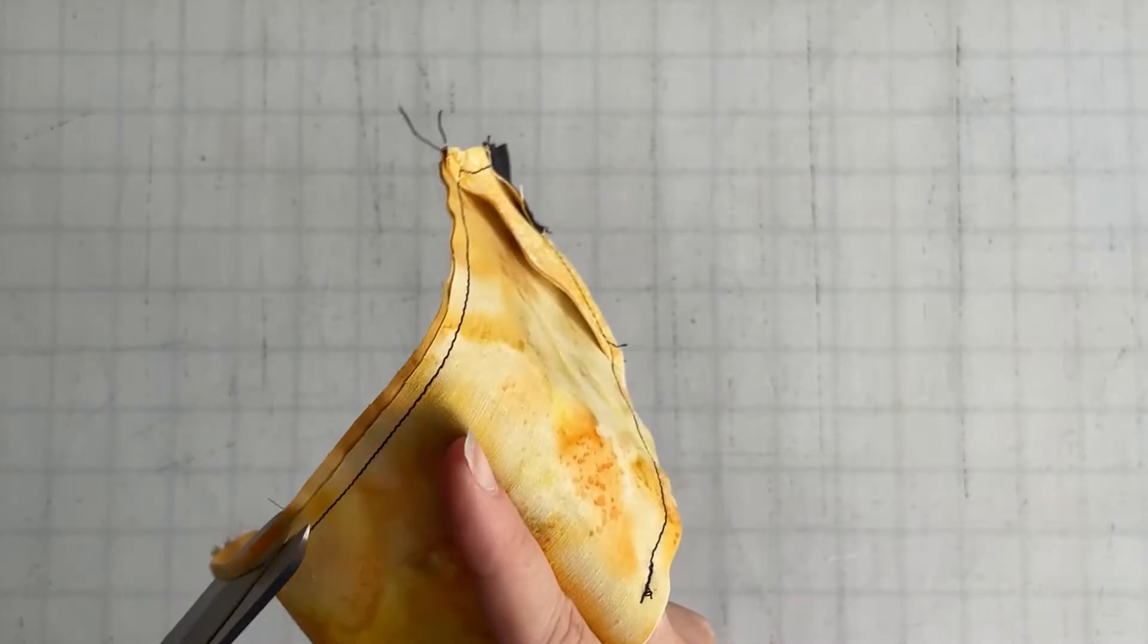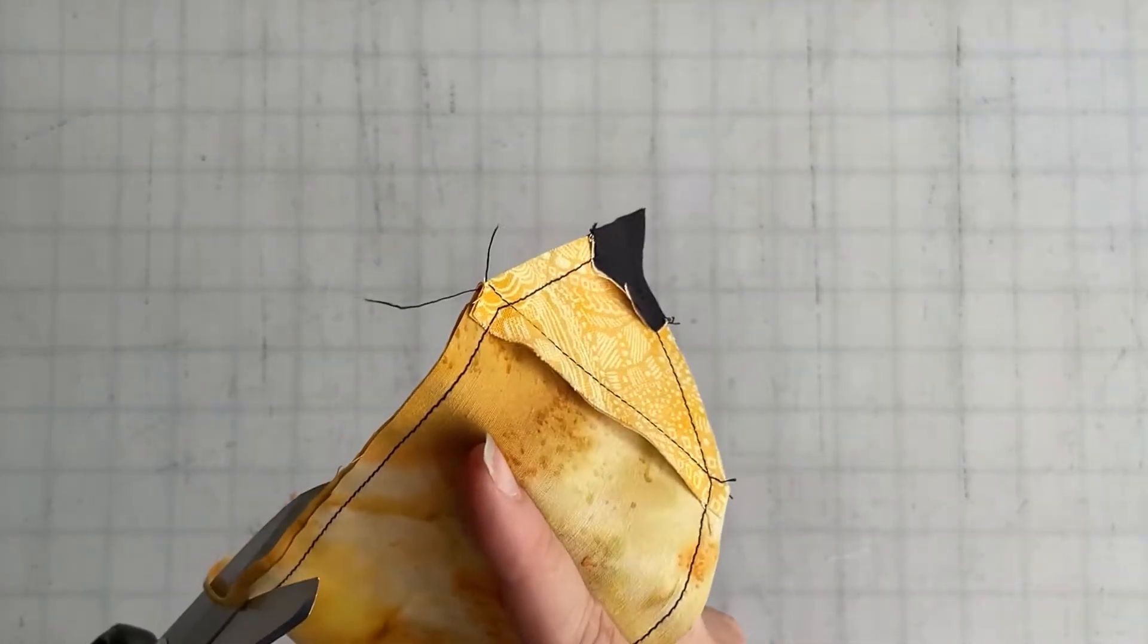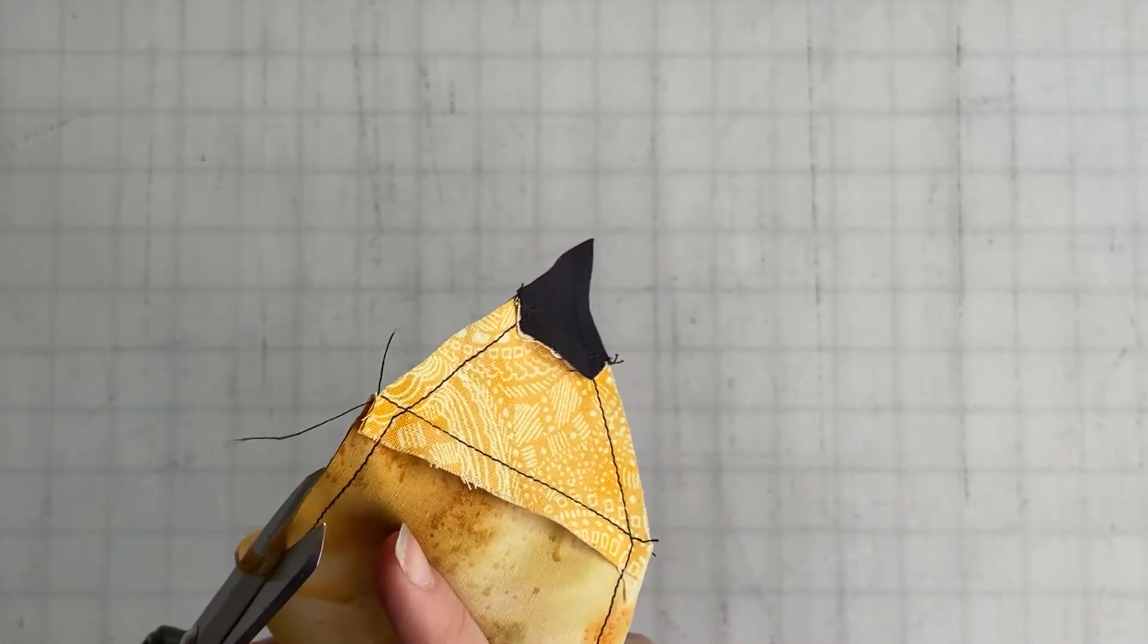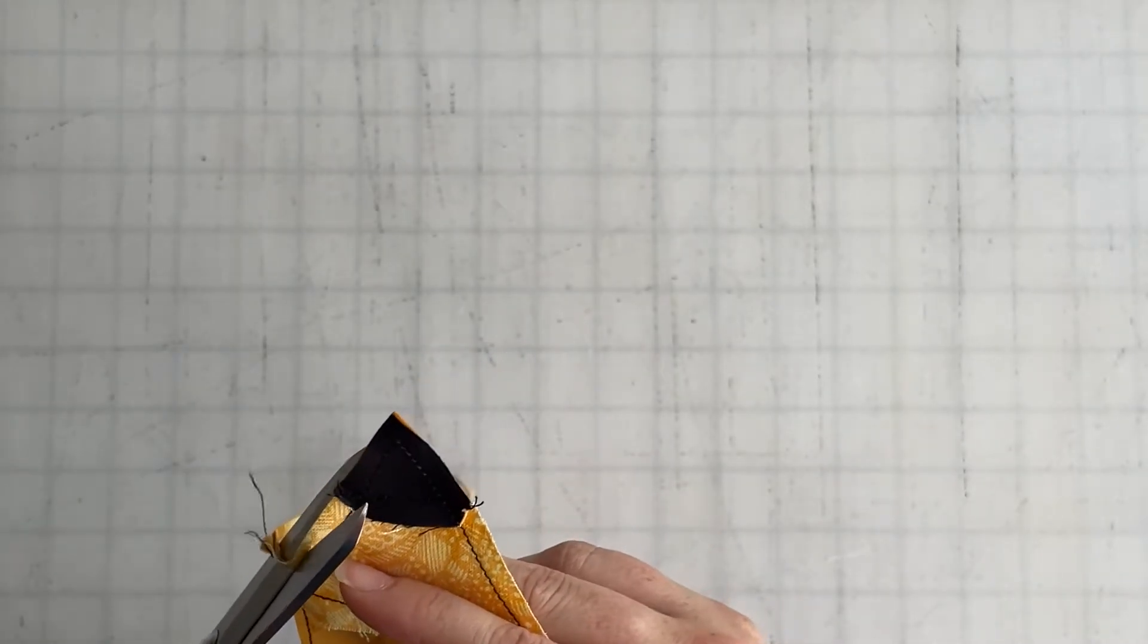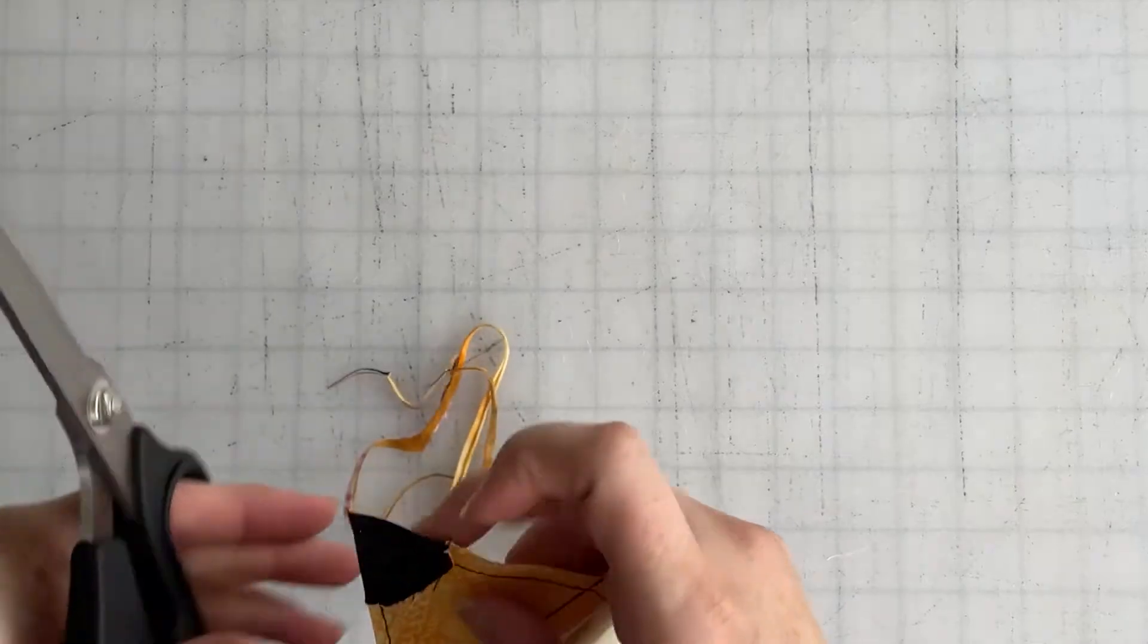Be really careful not to clip through your seam allowances. You can use pinking shears on this if that makes it easier, but since we're already at a quarter-inch seam allowance it's not too bad. We want to make sure we get these points extra pointy.